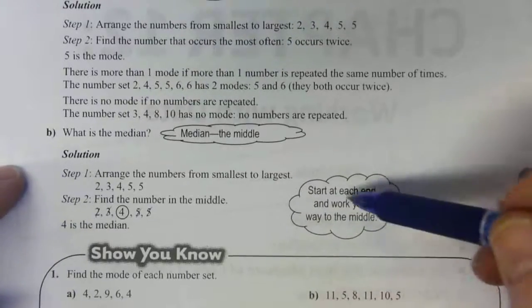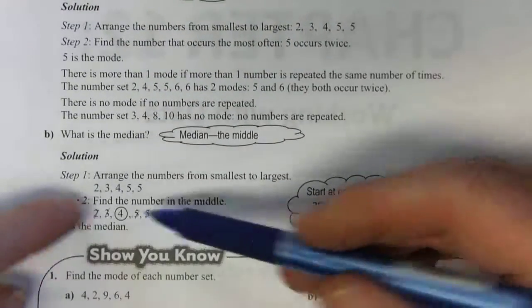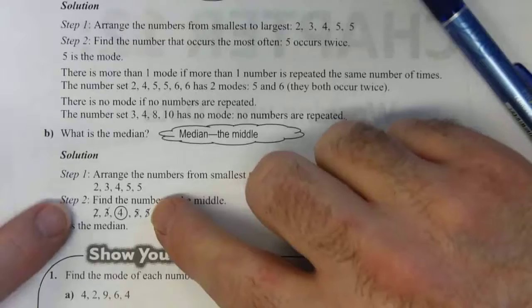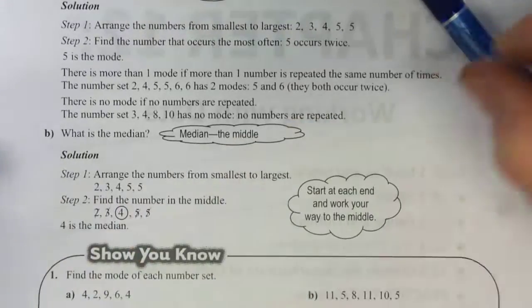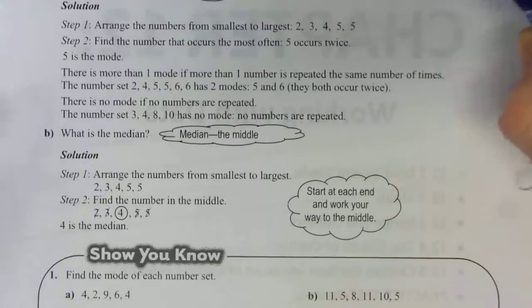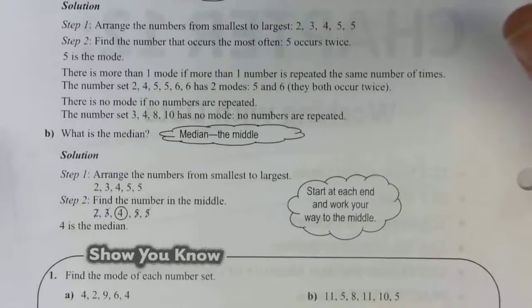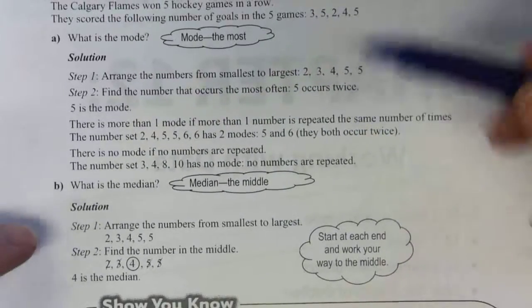So you start at each end and work your way into the middle. You can do it with your fingers too. You can just move in one, move in one, and there's that answer there. So four is the median in this set of data.